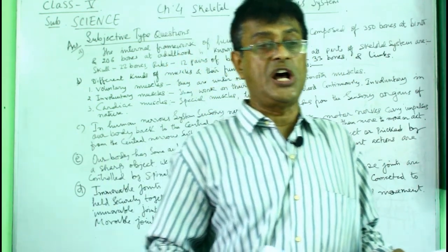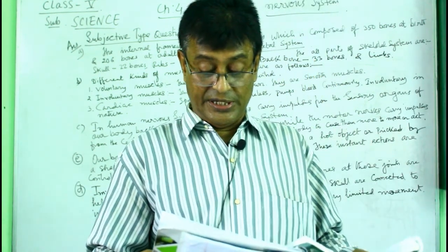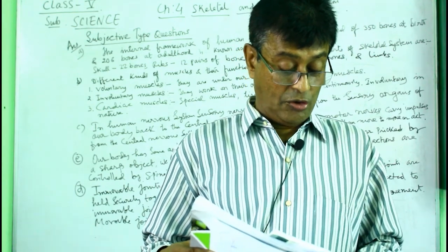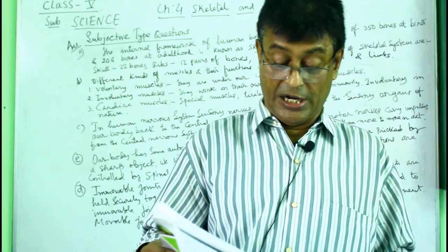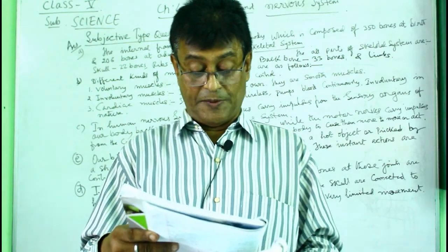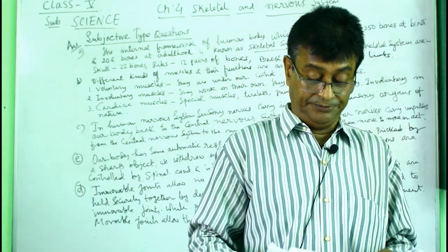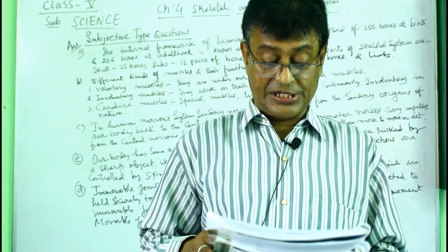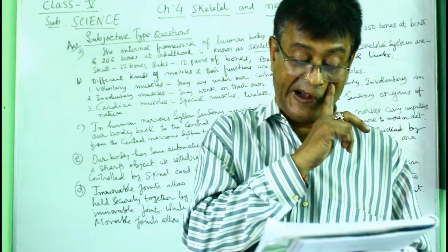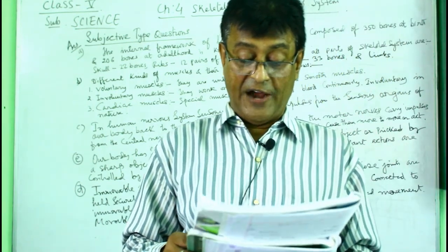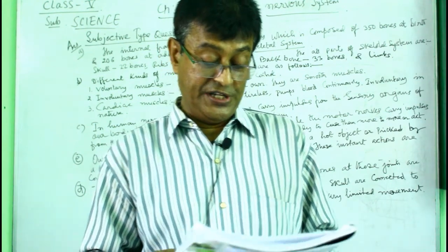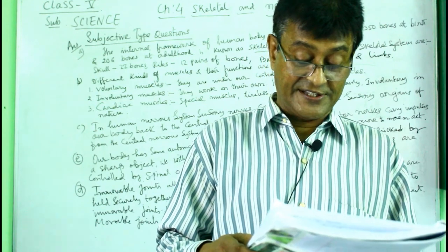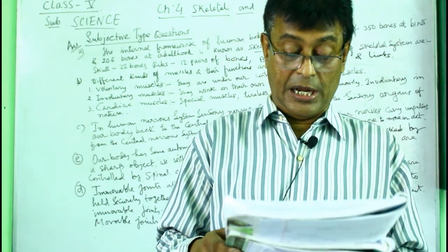When you have been pricked or touched a hot object or pricked by a stone, this is known as reflex action. The cord that connects the brain to the nerves is the spinal cord. In the match the column: A matches with heart (number six), B matches with foot pipe (five), C matches with wind pipe (seven), D matches with blood vessels (one), and E matches with number eight - forms the nervous system.